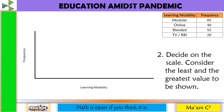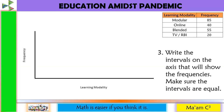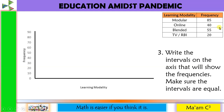Step two, decide on the scale. Consider the least and the greatest value to be shown. My least value is 20 and my greatest value is 85. For the scale, I'll make it by 10. Step three, write the intervals on the axis that will show the frequencies. Make sure the intervals are equal. The intersection of the axis is zero, and my scale is 10. So the values go: 0, 10, 20, 30, 40, 50, 60, 70, 80, and 90. Notice that the least value of 20 and the greatest value of 85 are covered in my frequency intervals.